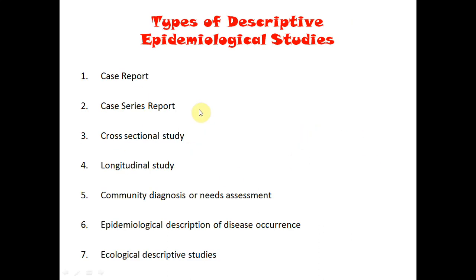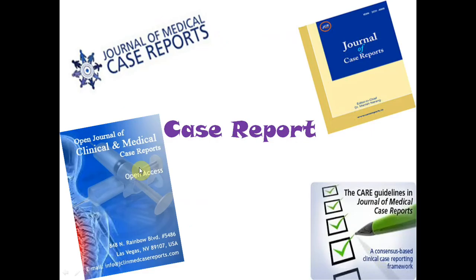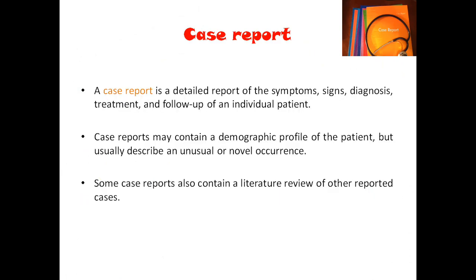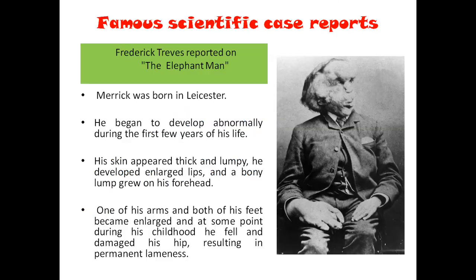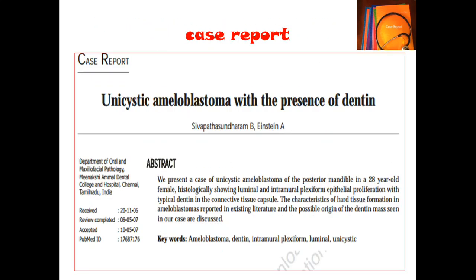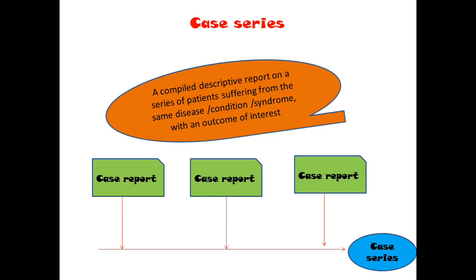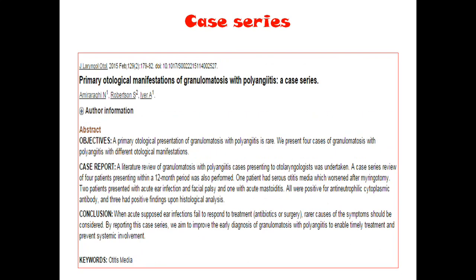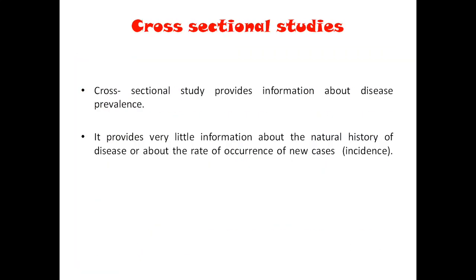Yesterday we had seen the types of epidemiological study — just to recap: case report, case series, cross-sectional, and longitudinal studies. Case report is just explaining a single case. Case series is like a compilation of case reports that happened at different times and different places with the same problem repeatedly mentioned from different parts of the world. In cross-sectional study, the population will be taken only at one point of time.